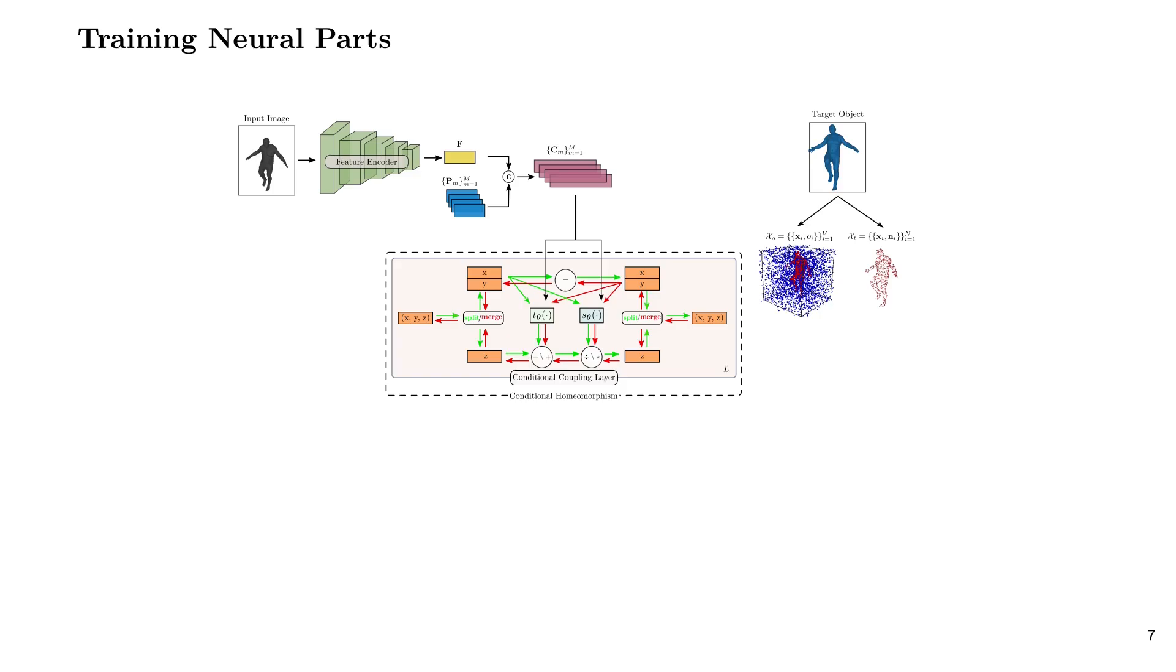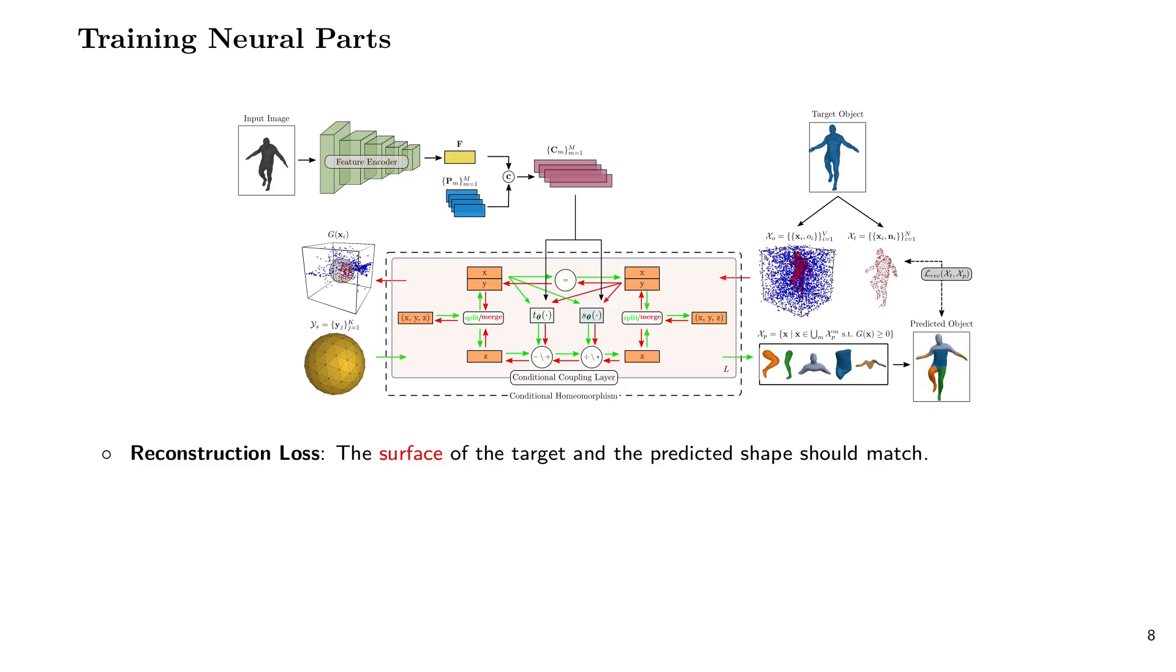Using our conditional invertible neural network, we deform a sphere into M primitives and vice versa. Parametrizing the homeomorphism with an invertible neural network allows us to optimize our network using a chamfer loss between points on the surface of the predicted shape and the target object, as well as with an occupancy loss that ensures that the free and the occupied space of the predicted and the target shape coincide.